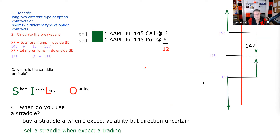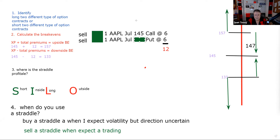On the straddle — pretty straightforward on the test. Also, straddles with different strike prices are called combinations. A straddle with different strike prices is a combination — you wouldn't do anything differently. Just combine the premiums: add to the call strike, subtract from the put strike. So if it's a 145 call and 140 put, we subtract from 140. Same four test questions — it's just called a combination.